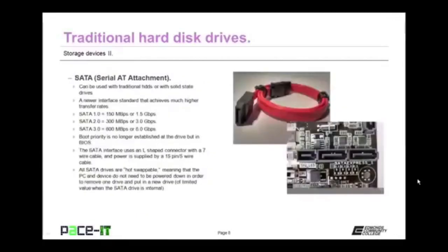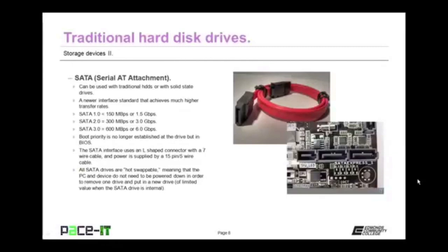With the introduction of EIDE, another relationship could be chosen — cable select — where the device's position on the cable would determine if it was the master or slave. Then along came serial AT attachment, SATA. It can be used with traditional hard drives or solid state drives. SATA 1.0 was capable of 1.5 gigabits per second. SATA 2 was capable of 300 megabytes or 3 gigabits per second. SATA 3 has a theoretical transfer rate of 6 gigabits per second. On SATA, only one drive is allowed per cable, and boot priority is no longer established at the drive but set in BIOS. All SATA drives are hot swappable.